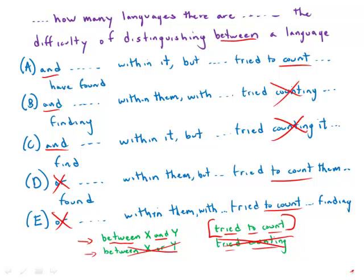Now we'll look at the pronouns. So we have between a language and the sub languages or dialects within that individual language. Within it. So the it is correct here. The them is incorrect.